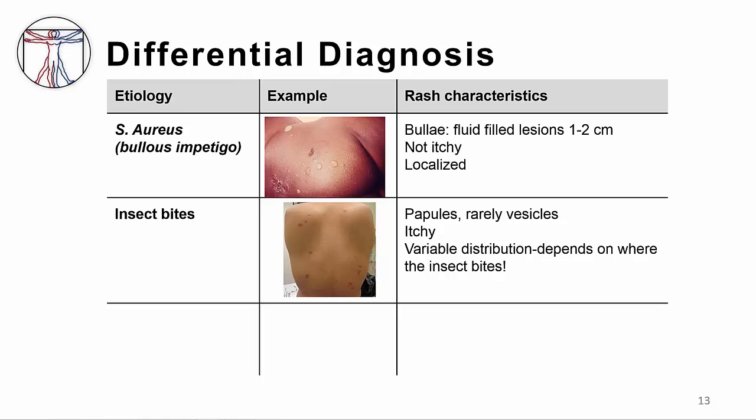Insect bites can look very similar to VZV and be itchy. Careful observation for the progression of the rash can help distinguish between the two. Often the lesions appear all at once because of the exposure to the insect, and don't continue to appear in crops like VZV does.